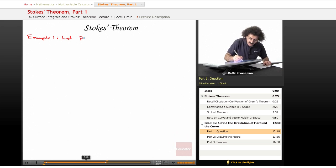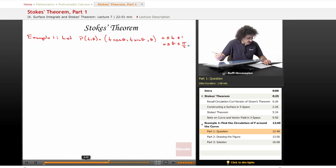Let P of t theta equal t cosine theta, t sine theta, and theta for t greater than or equal to zero, less than or equal to one, and theta greater than or equal to zero and less than or equal to pi over two.